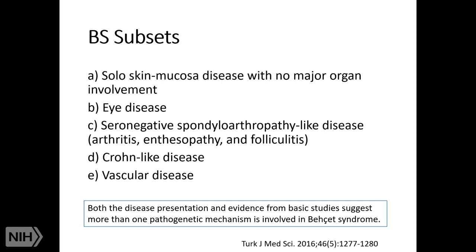They claimed that Behcet syndrome has subsets, and divided the disease into four subsets: mucosal disease with no major organ involvement; patients with only eye disease; a seronegative spondyloarthropathy-like disease; and a Crohn-like disease, because there are many similarities between Crohn and Behcet disease. Vascular involvement is the major differential diagnosis between the two disorders. The last group is vascular disease.